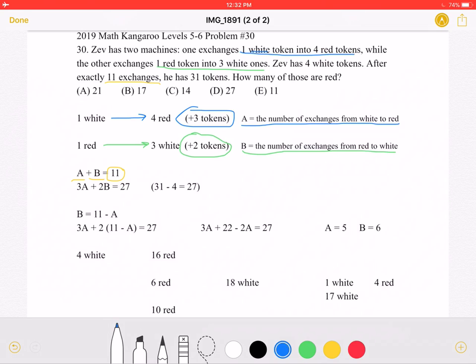Because every time an A exchange is made from white to red, three tokens are gained, 3A plus 2B, because two tokens are gained with each exchange from red to white, must be equal to 27.